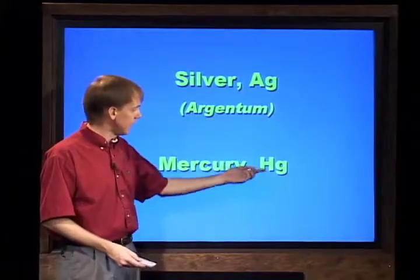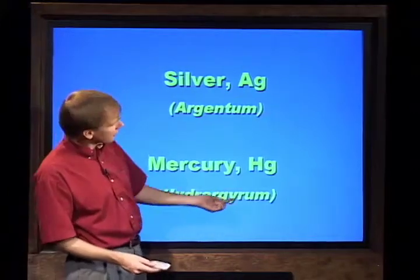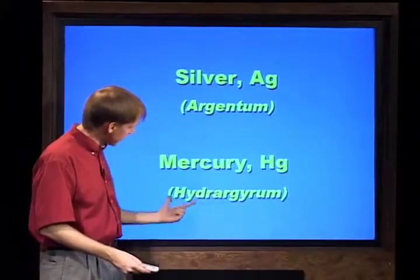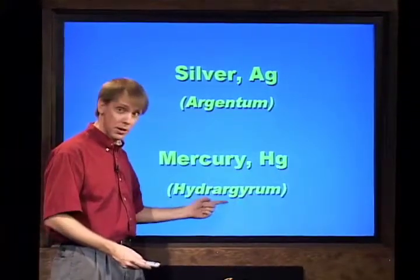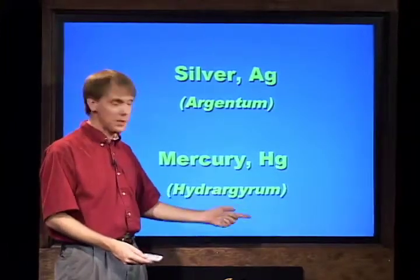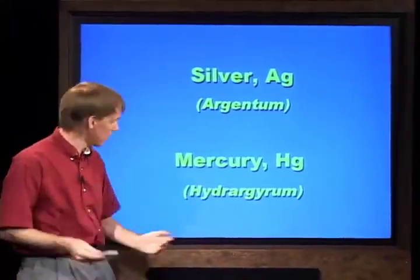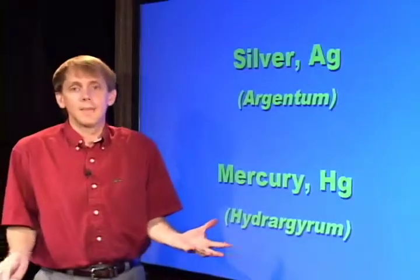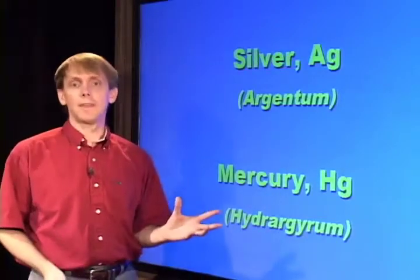Mercury's symbol is Hg, which stands for Hydrargyrum. Hydra means water — so this is liquid silver, quicksilver, mercury. It's a liquid metal, and that's where the name comes from: Hydrargyrum, Hg. The atomic symbol is used to denote the element that you have.